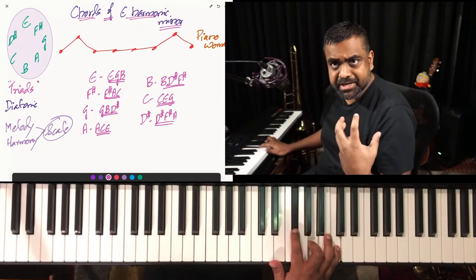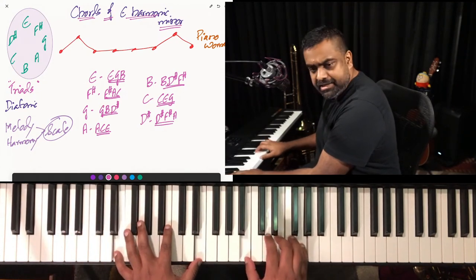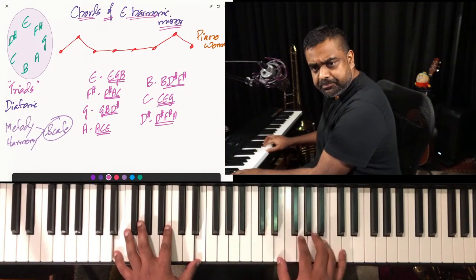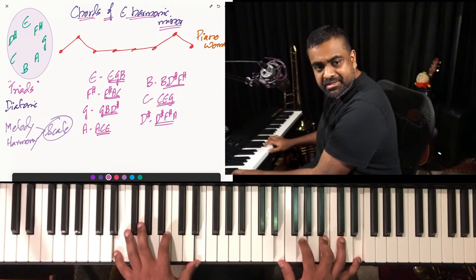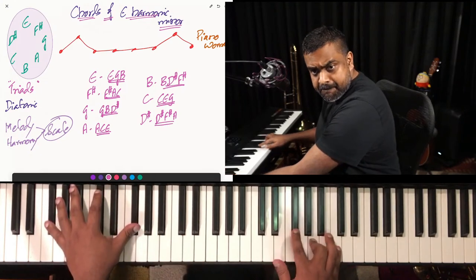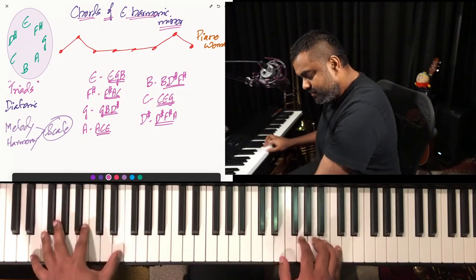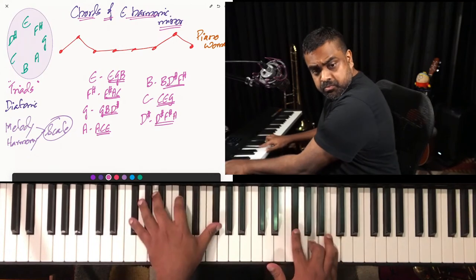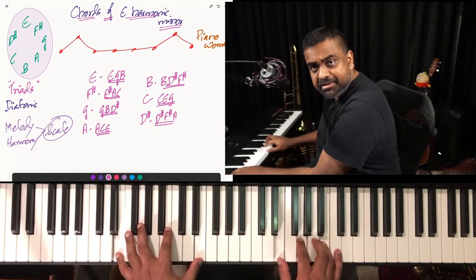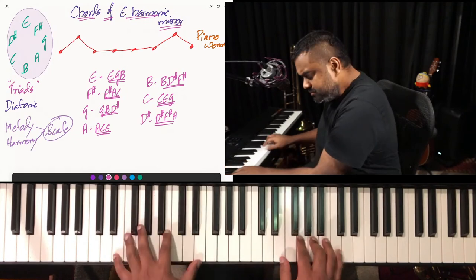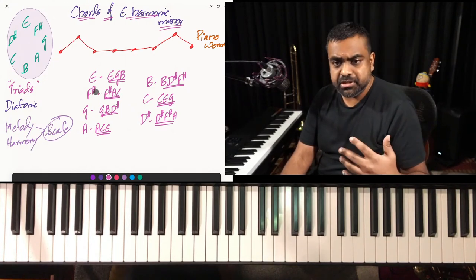Each chord has a very different emotion. E, G, B feels very pensive and melancholic — we call it a minor chord, very somber, aloof, secluded. The next chord — F#, A, C — is a bit more tense, like it wants to go somewhere. You can actually play around with those two chords. I'll name them very shortly.